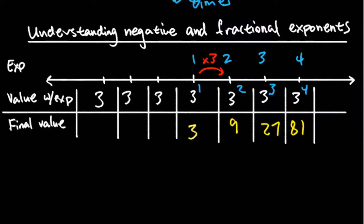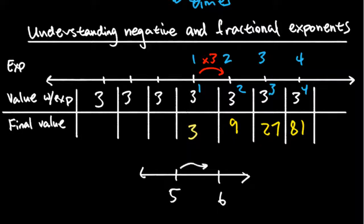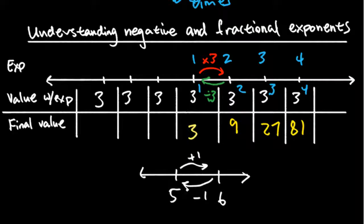Think about a normal number line: to go from five to six you add one; to go backward you subtract one. So going backward here means instead of multiplying by three, you do the inverse — divide by three. From 81 divide by three gives 27, divide by three gives nine, divide by three gives three, divide by three again. Now what's the exponent? We've been subtracting one each time, so one minus one is zero. And three divided by three gives one. So something to the zero power is just one.